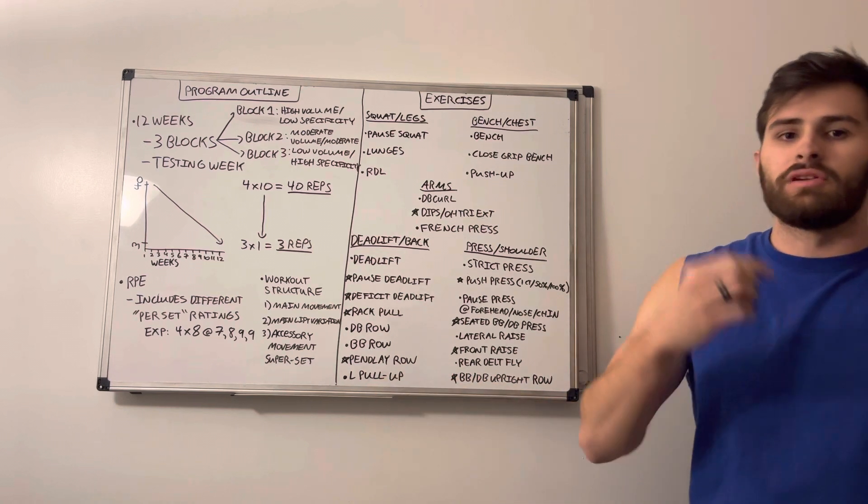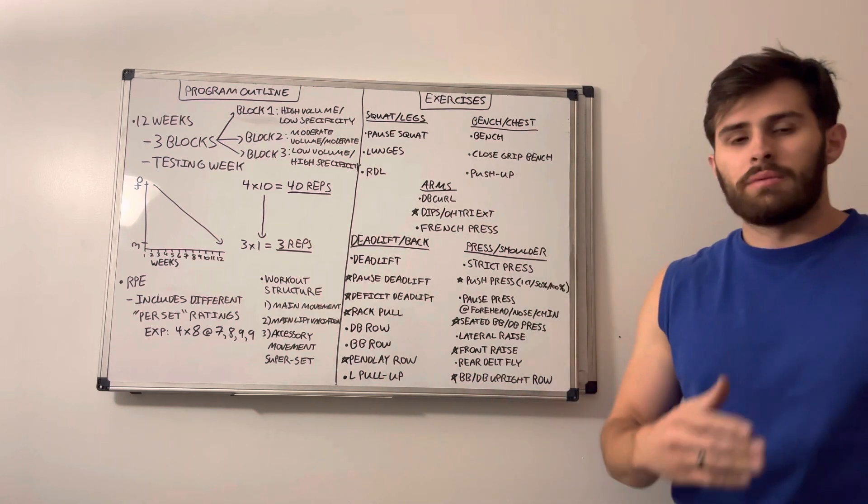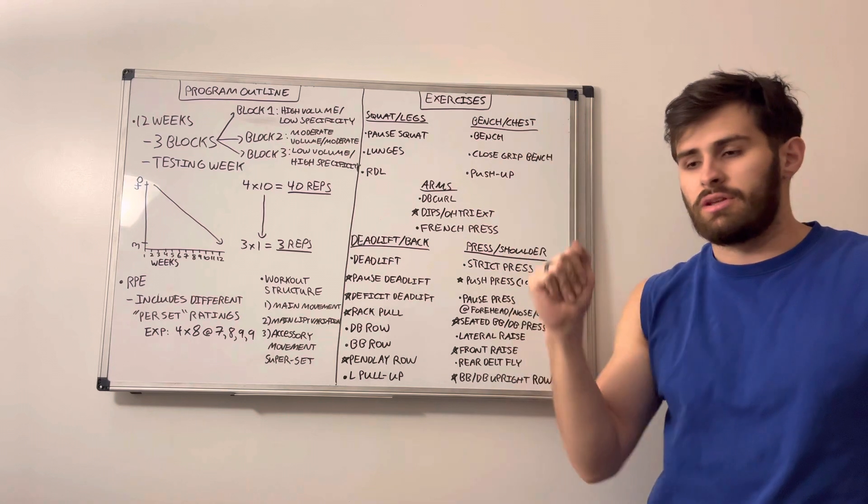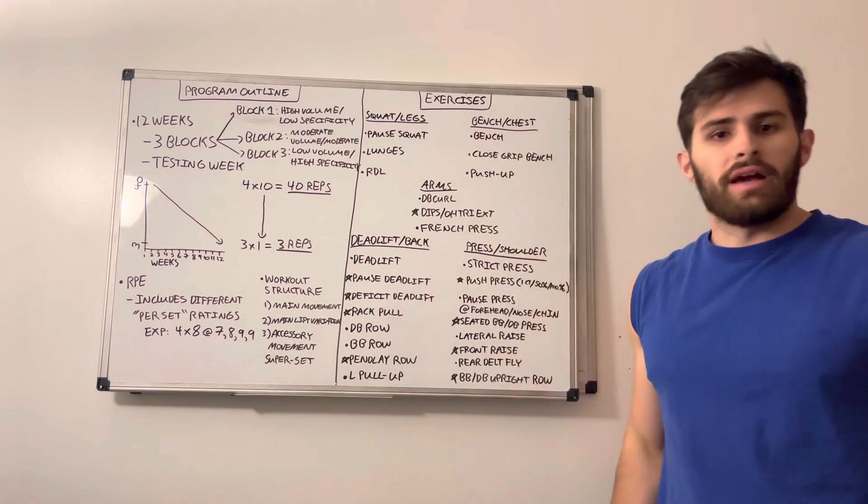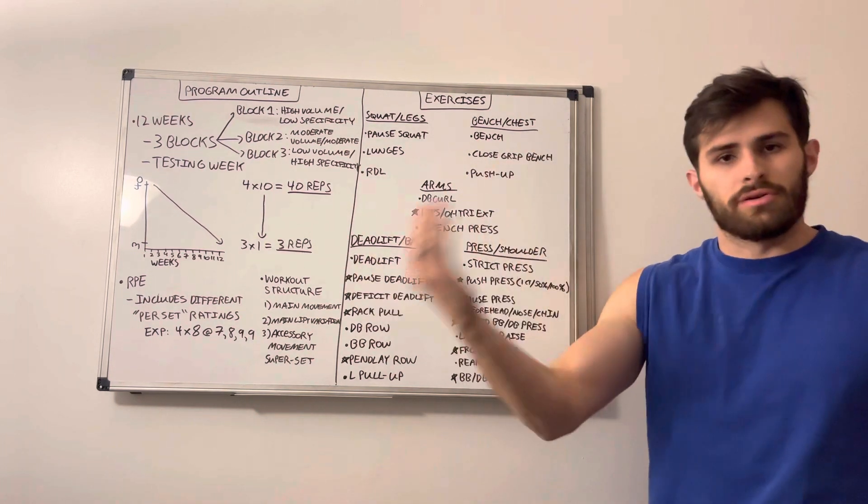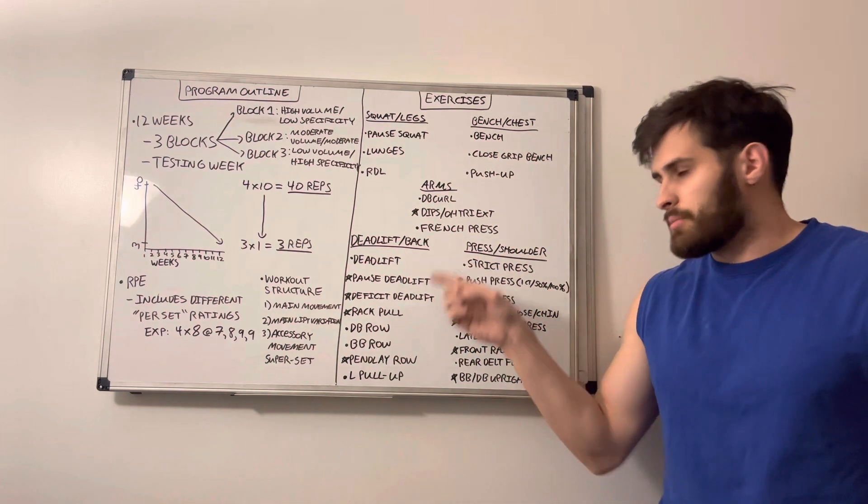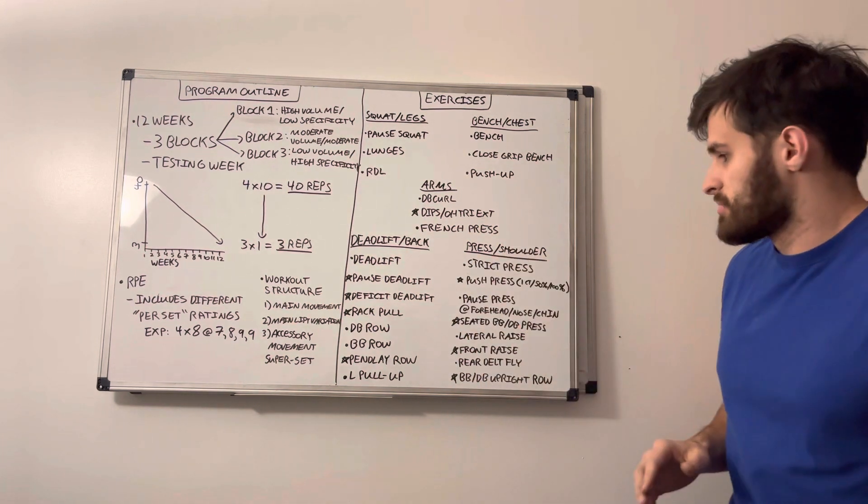L pull-ups, a few of you probably know what these are. These are pull-ups out of the rack with the bar on the hooks and you can adjust the height and where your legs are on the ground to either make it easier or harder. So this will be our back focus or deadlift focus movements.